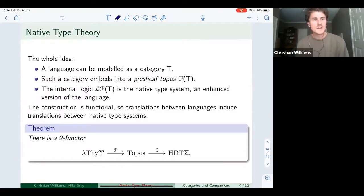And in particular, the construction is functorial, so that translations between languages induce translations between type systems. So if you have some kind of compiler that's translating between languages, it'll also carry over this higher order reasoning. So the main theorem of our paper is that there is a two functor from our class of theories to a two category of higher order dependent type theories.